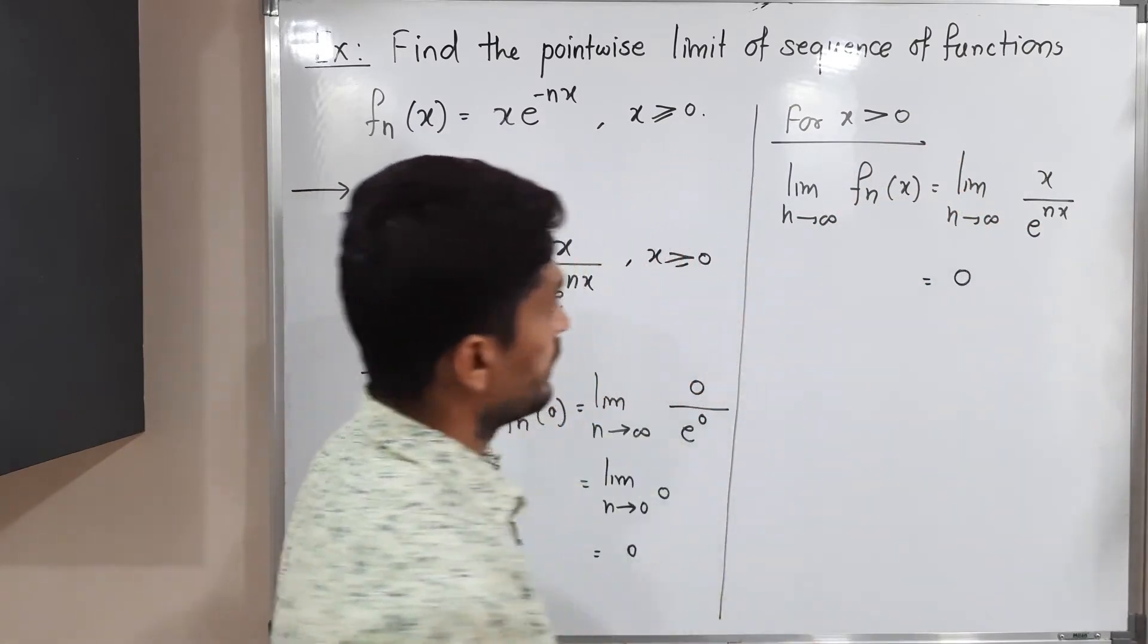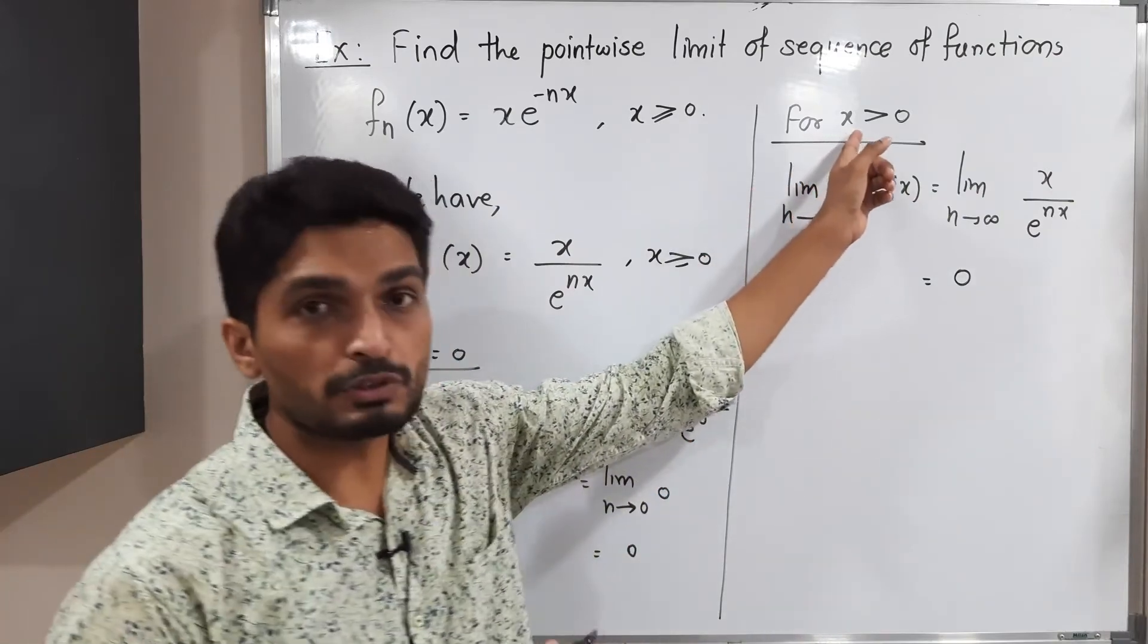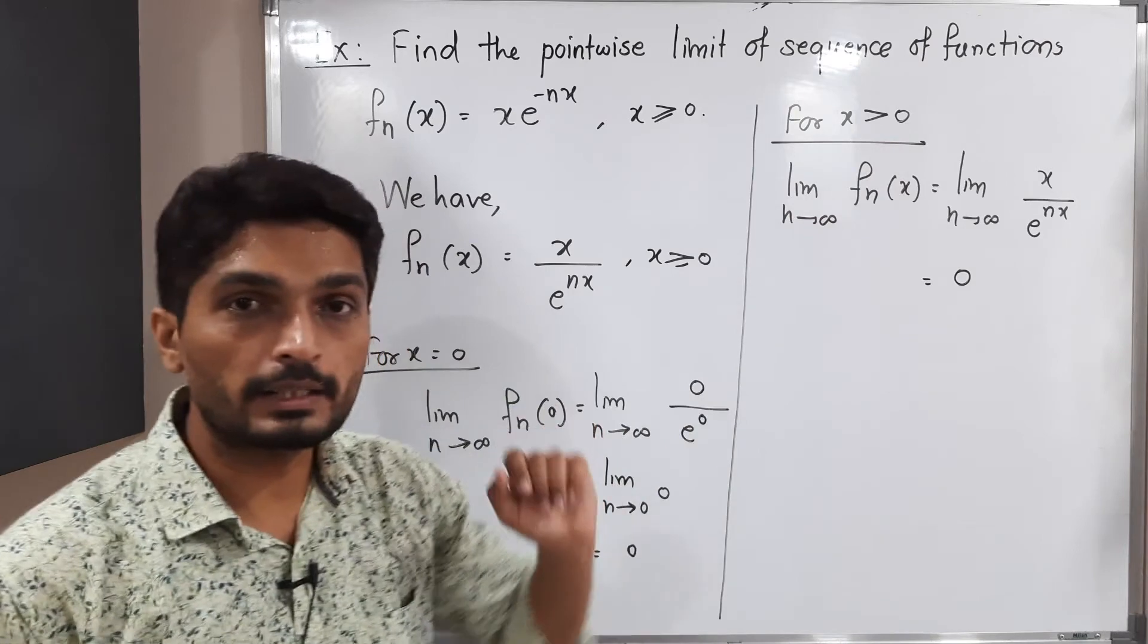So its value will be 0. That means if x = 0, we are getting limit 0. If x ≠ 0, that means strictly greater than 0, then also we are getting limit 0.